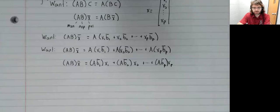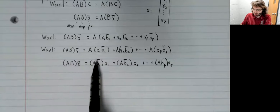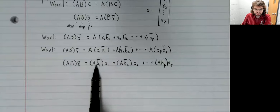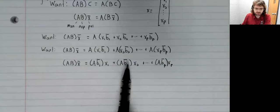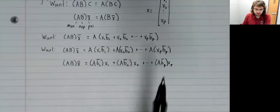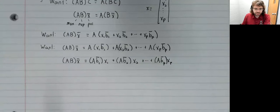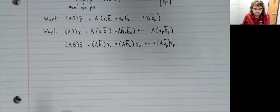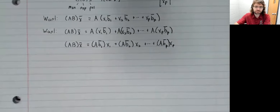And when you do that, what do you get but a linear combination of vectors. This is a vector, this is a vector, and so on. A linear combination of vectors can be rewritten as a matrix times a vector.